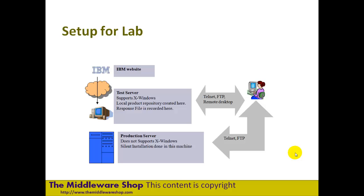Typically what you'll do is create some sort of test environment or test server where you'll perform an installation in an environment that's similar to production. The file systems would be set up the same way, for example on AIX. You record the installation to the appropriate file systems, then distribute and customize that response file — perhaps for local host information or naming conventions — and then move that recorded installation and, if appropriate, the repository to a production server.